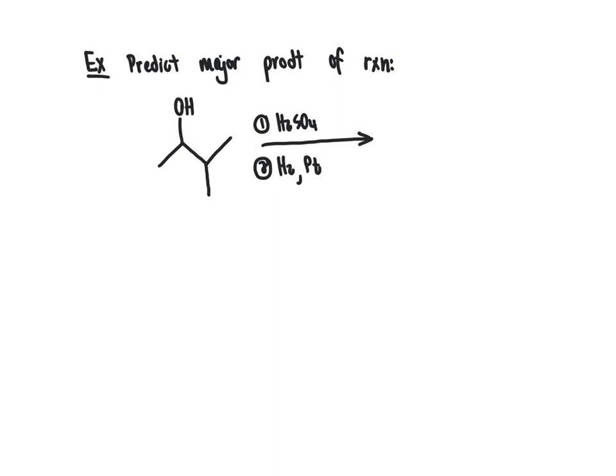So I encourage you in this example problem to try to do this on your own, and then check your answer to see whether you got to the mark or not. We're predicting the major product of the reaction shown here. I'm going to write out first the product that would result from the first reaction, that is our dehydration reaction that we recognize is occurring because we have acid mixed with our alcohol.